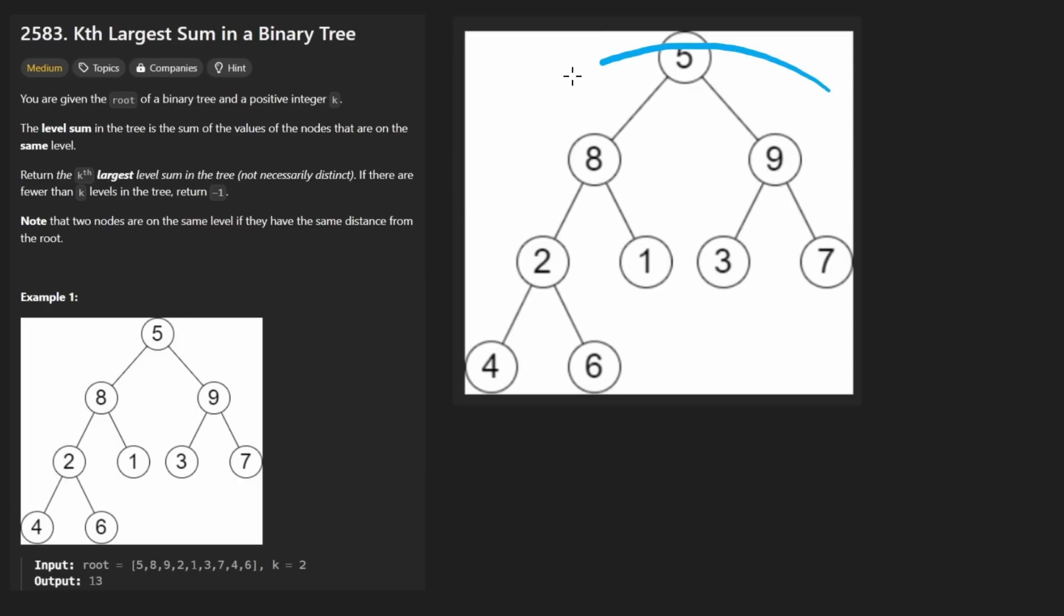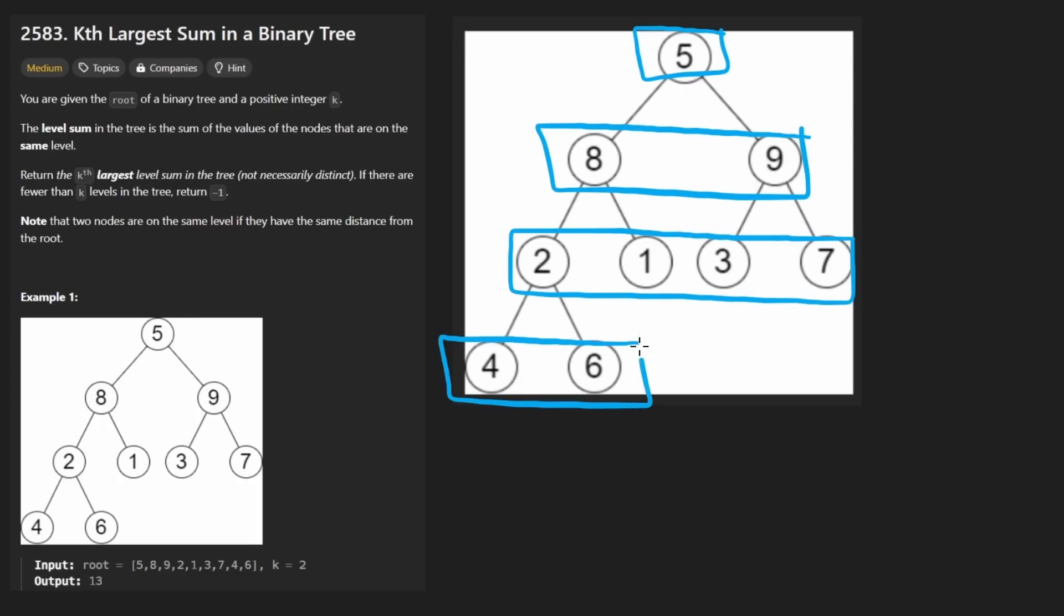Suppose we're given a binary tree that looks like this. What we want to do is compute the level sum of each level in the tree. So that's relatively simple. Can you guess which algorithm we're going to use to do that? We could use either DFS or BFS. Those are the main algorithms we use on trees. Technically either will work, but I'm going to prefer the BFS approach. It's a more natural way to do this.